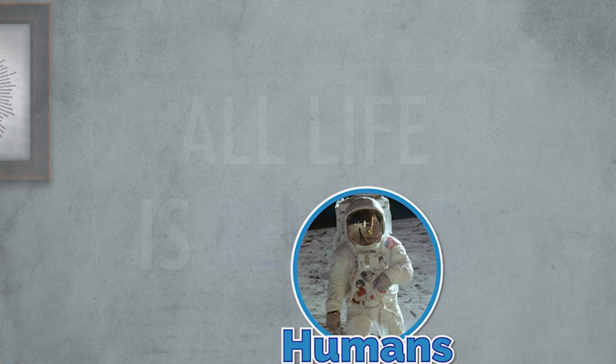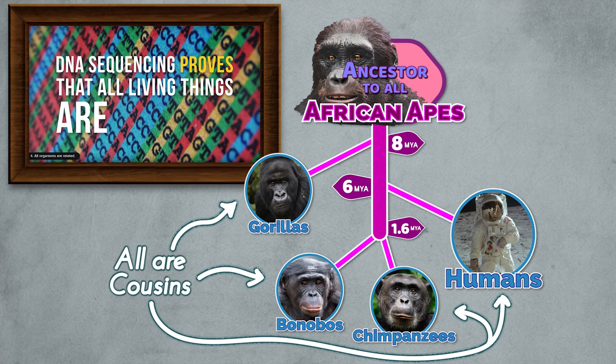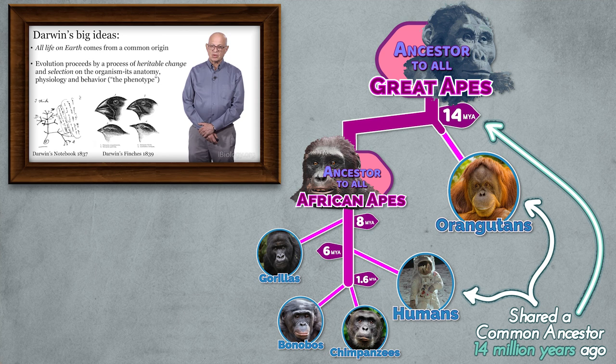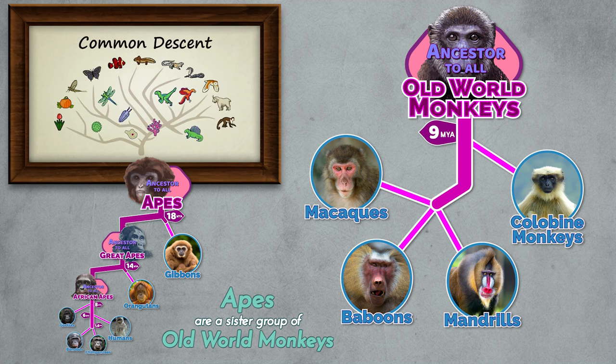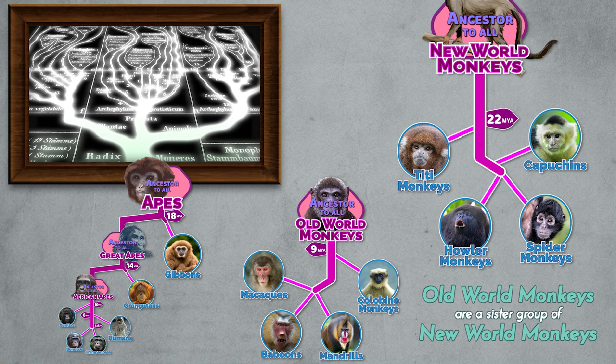All life is related. All living things are related to one another. All life on Earth is related and comes from a common origin. All animals are related by ancestry. This showed that all known life is related and descended from a common ancestral state. They descended from a common ancestor — all life, as we know it, is descended from a common ancestor.